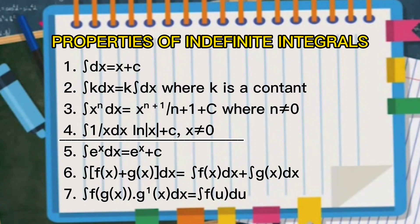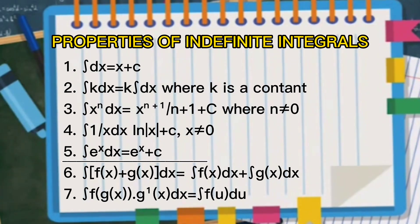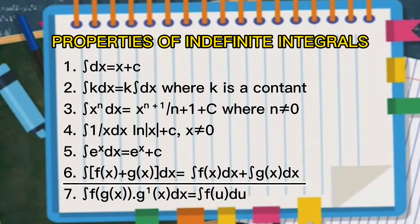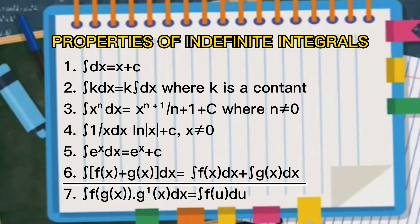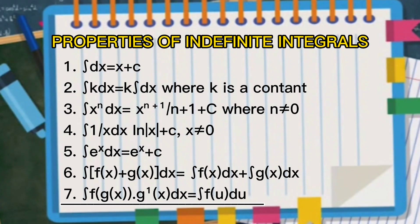Property number four: the integral of 1 over x dx is equal to the natural log of x plus C, where x is not equal to zero. Property number five: the integral of e to the power of x dx is equal to e to the power of x plus C. Property number six: the integral of f(x) plus g(x) dx is equal to the integral of f(x) dx plus the integral of g(x) dx.